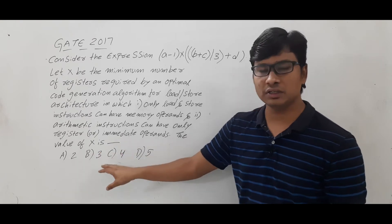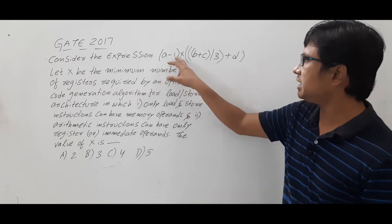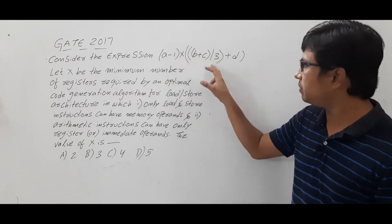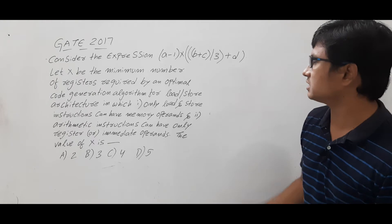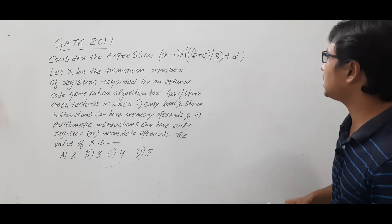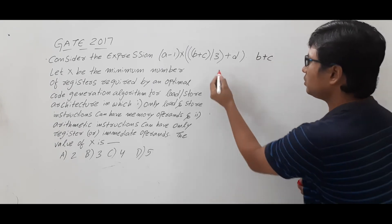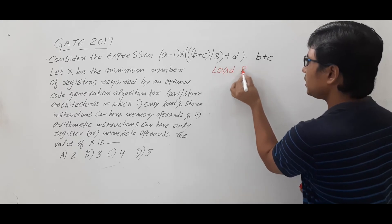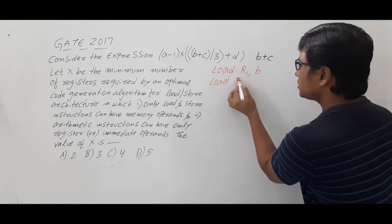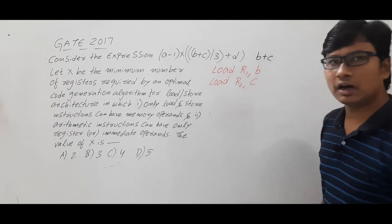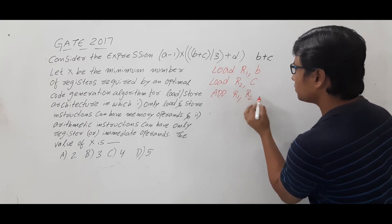We need to solve this question and find the minimum number of registers required. The expression is: (a minus 1) into (b plus c by 3 plus d). First I want to perform b plus c. I will load the b value in register r1, and similarly load the c value in register r2. Now I can perform ADD r1, r2.